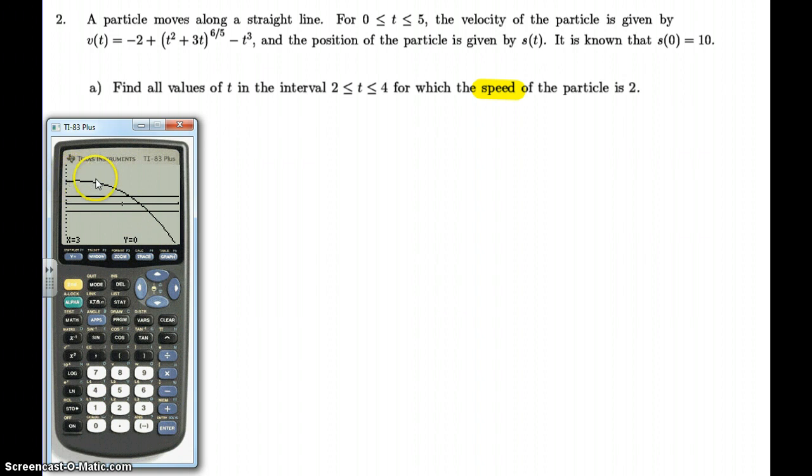And notice this is the first function here, y1, which is our velocity function. And then the two constant functions, y equals 2, y equals negative 2. We're going to find the intersection of those functions next. So second trace, intersection. First curve is y1, second curve y2. Guess, that's good enough. And we get 3.128.